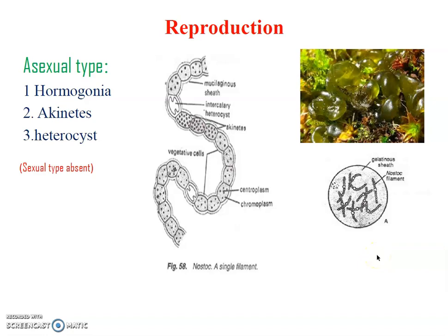Uses of Nostoc. Nostoc is very important in the ecosystem because it is at the primary level. It produces food material for aquatic fish as well as protozoans, etc. So it is very important for our ecosystem. Thank you.